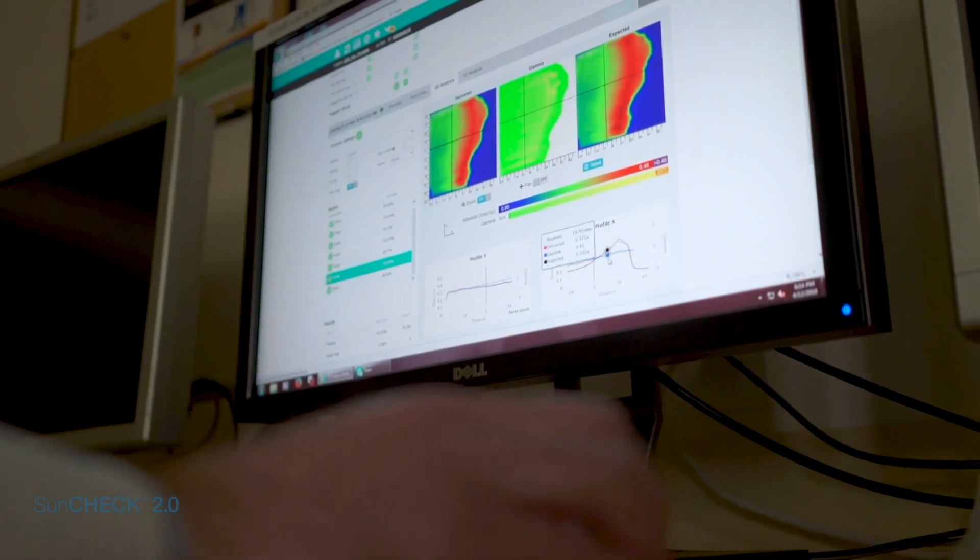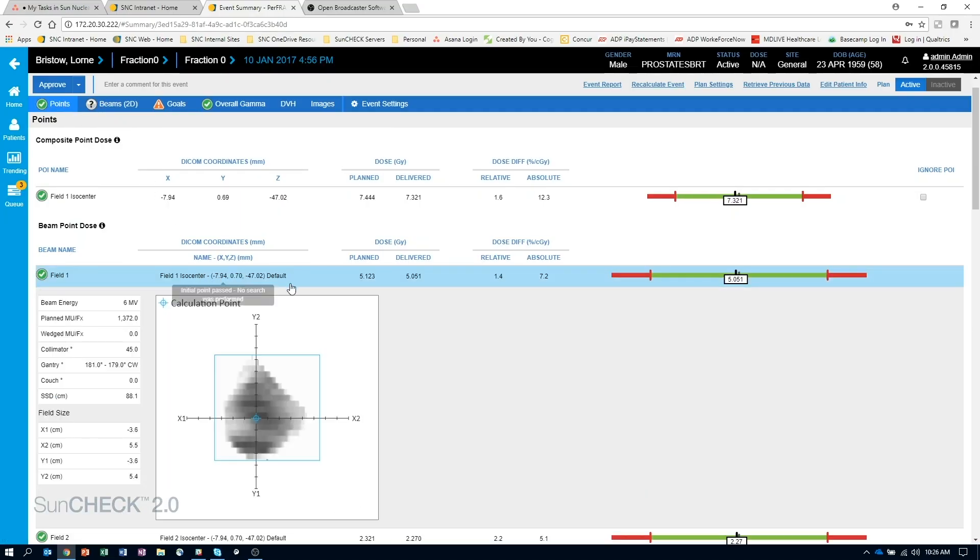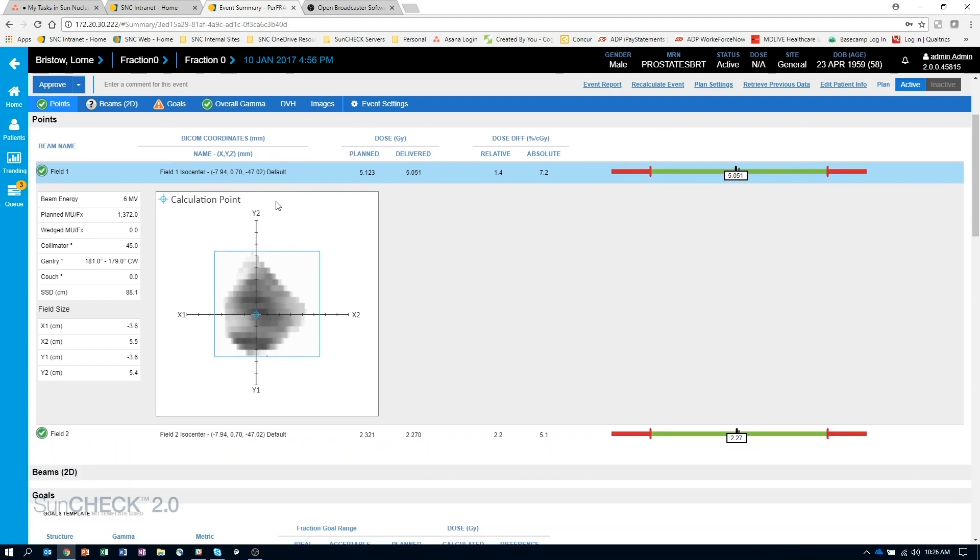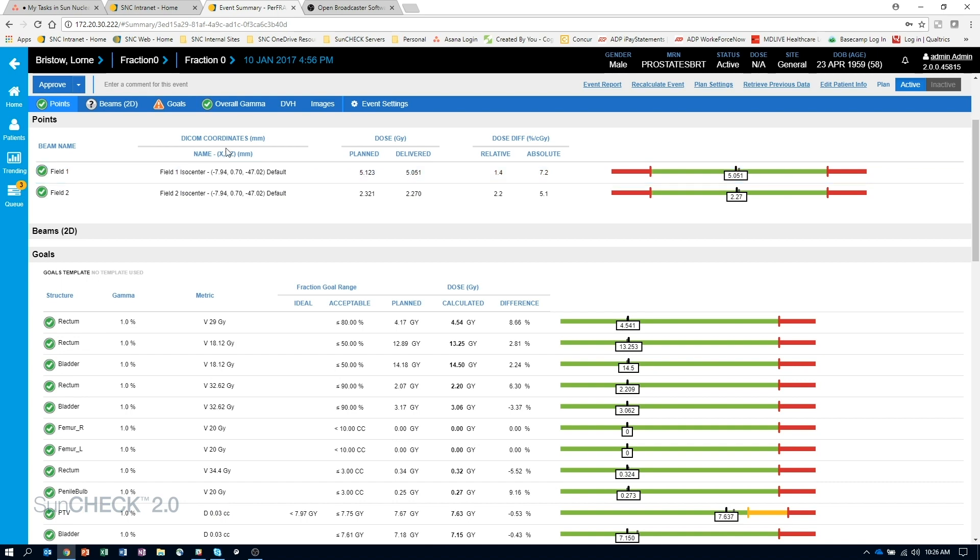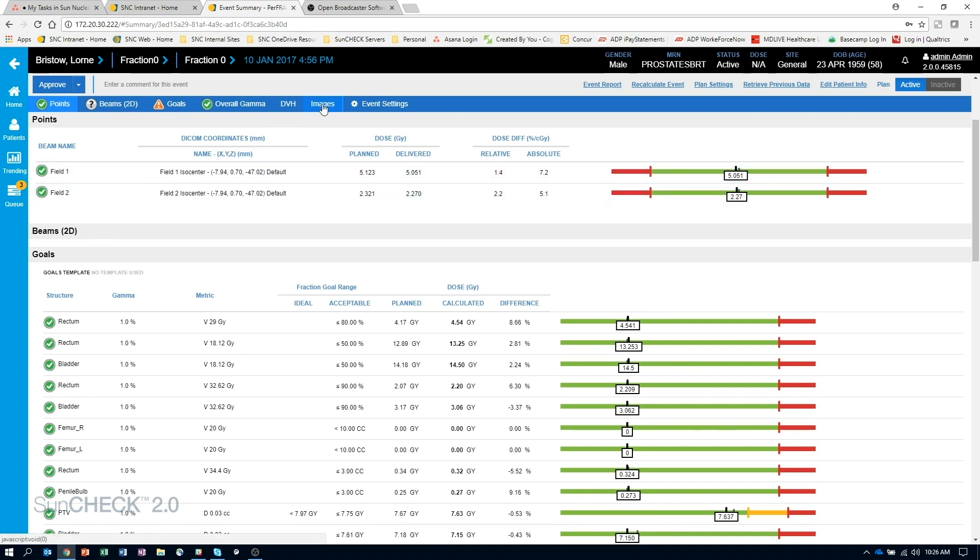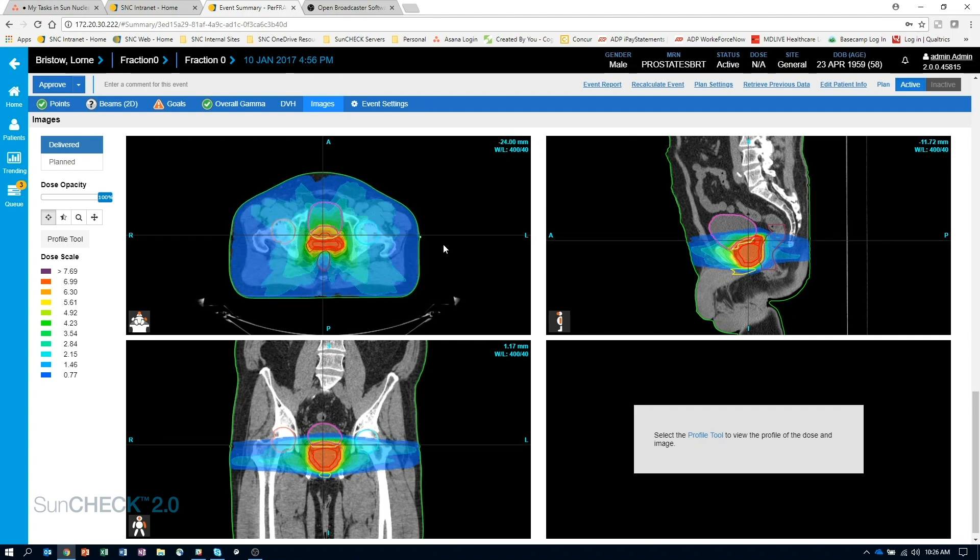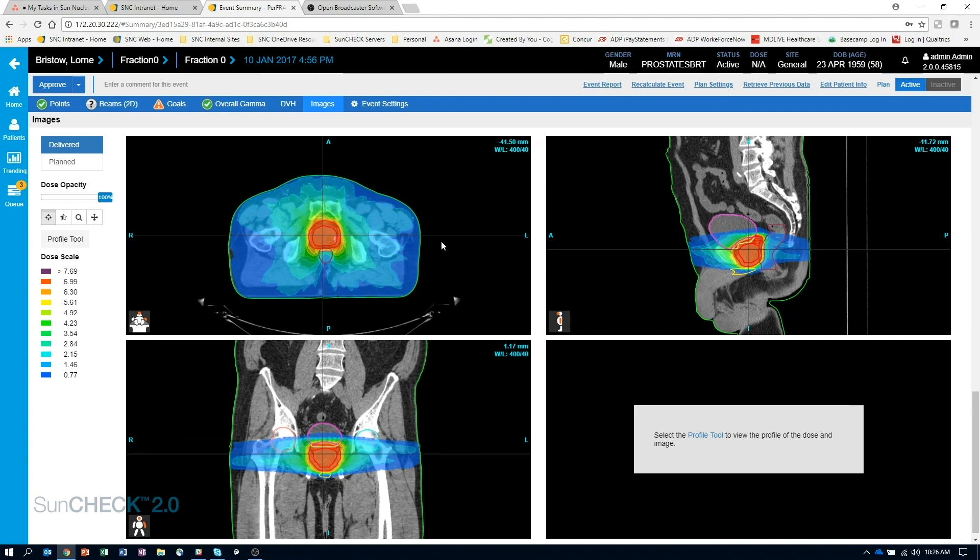The SunCheck platform allows customers to more efficiently do their job. Rather than having several different systems—one for machine QA, one for patient QA—everything is in one database and it's all accessed through a web-based platform.